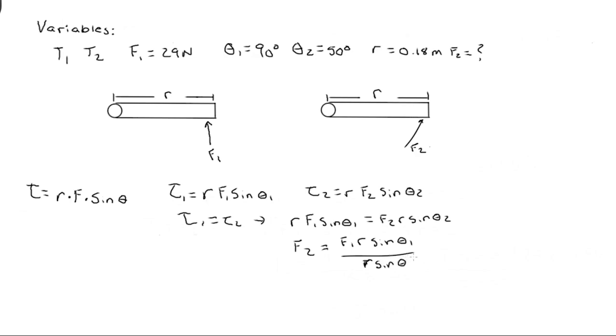Since R is in both the numerator and denominator, we can cancel those out, so we are left with F2 is equal to F1 times sine A1 divided by sine A2. Since we know all of the variables for this, we can plug them in, and we are given F2 is equal to 29 times sine 90 divided by sine 50. When we plug this into the calculator, we get a final result of 37.86 newtons.